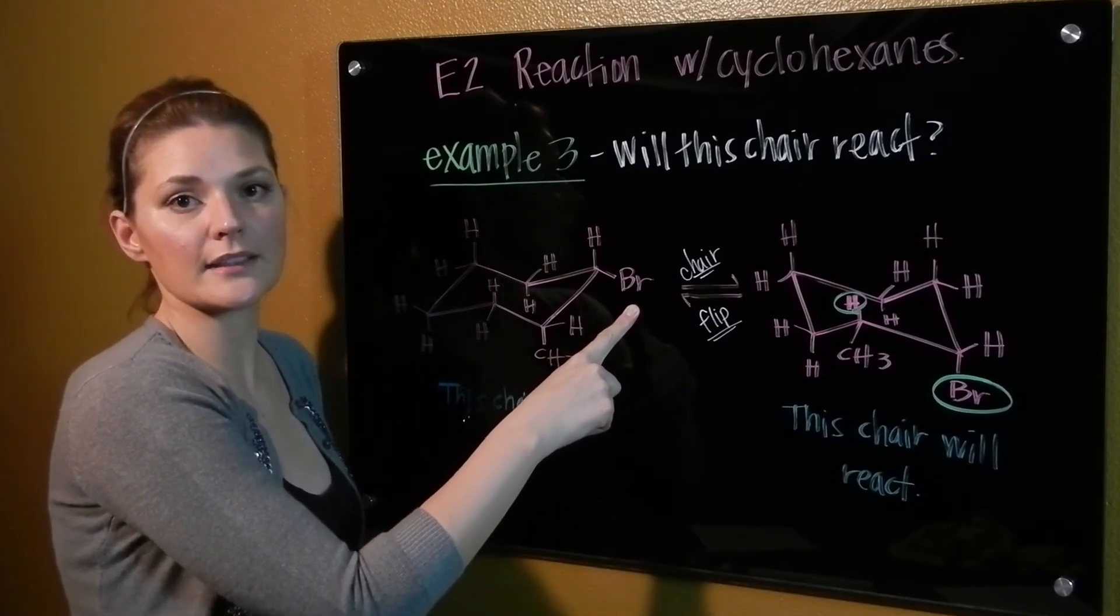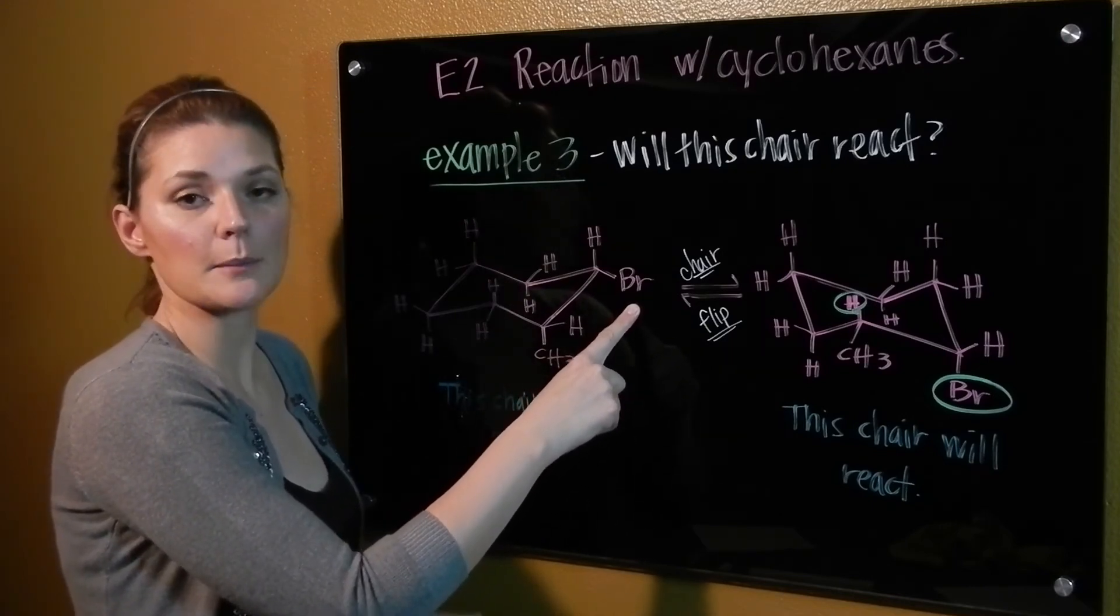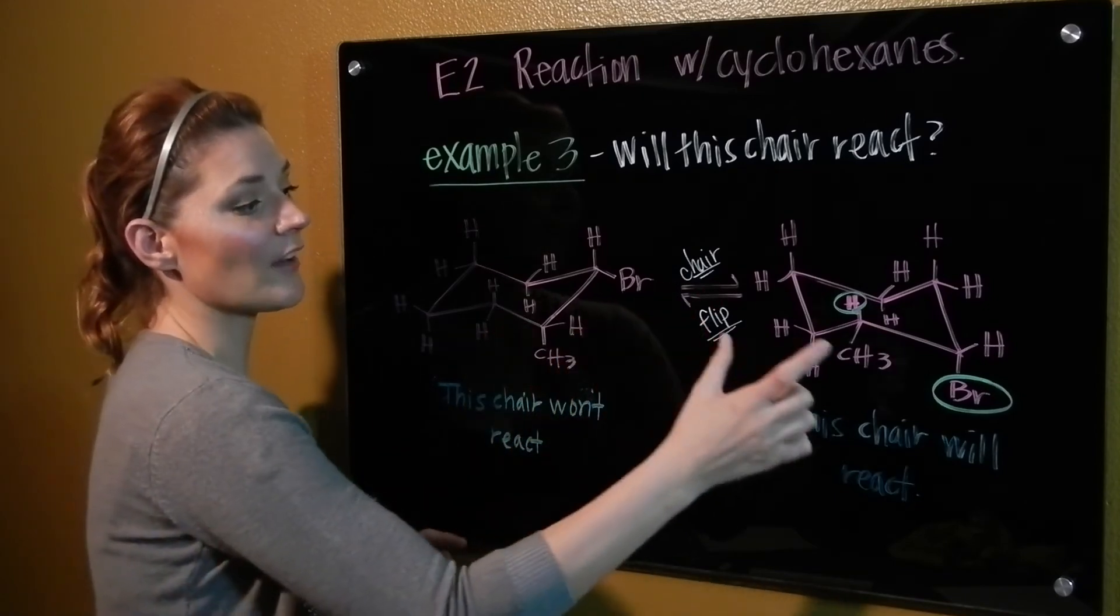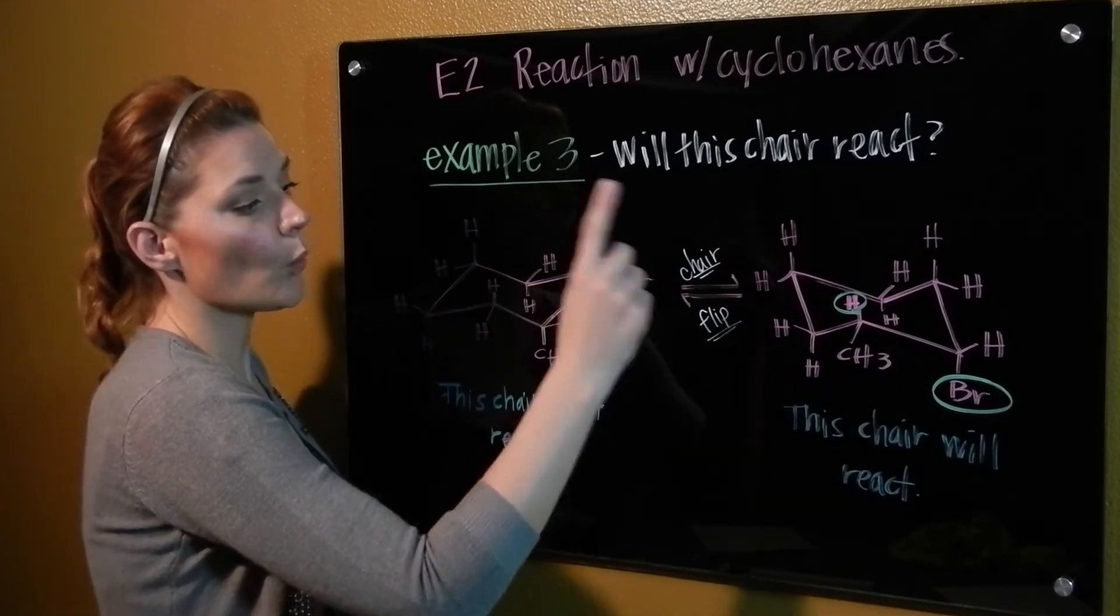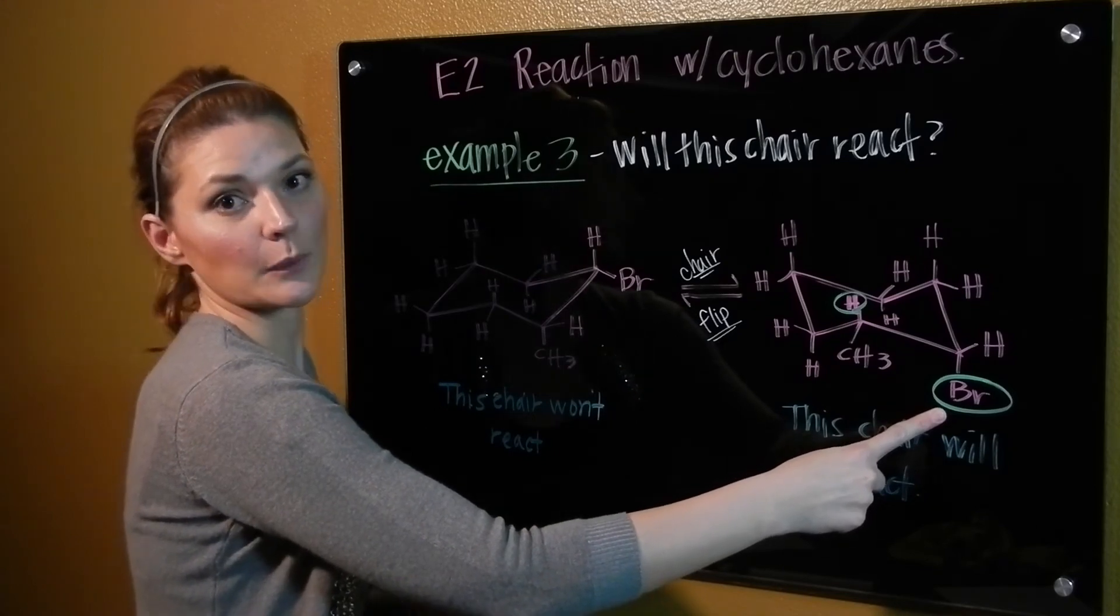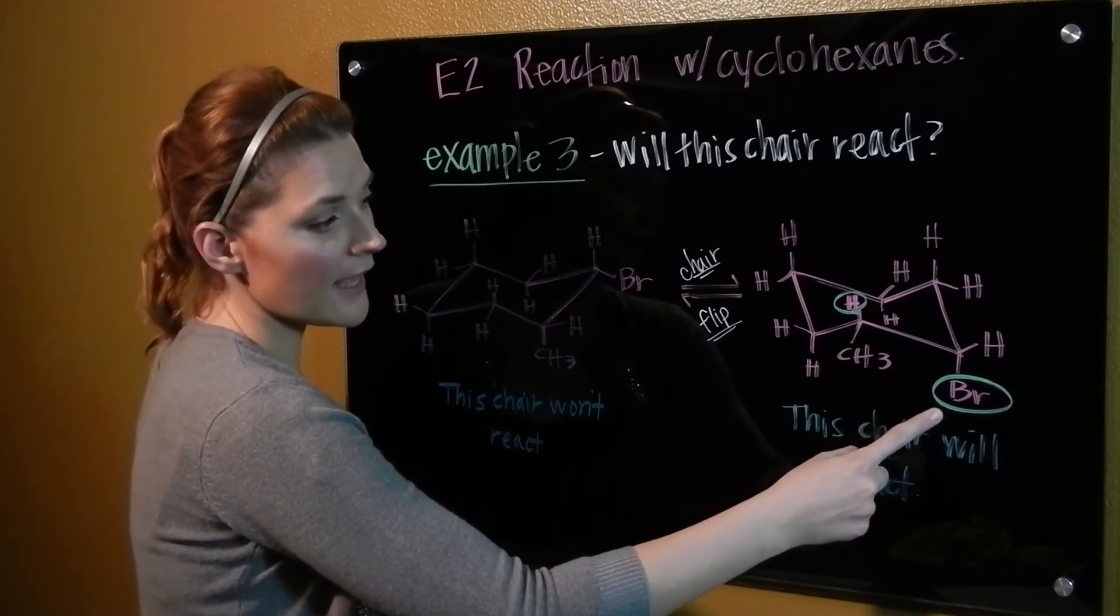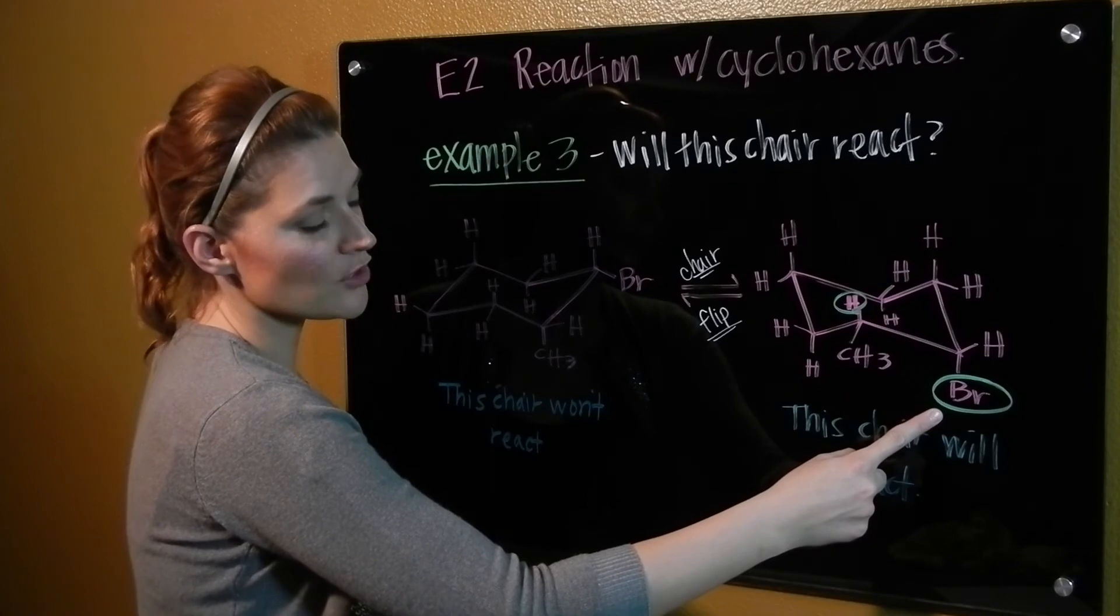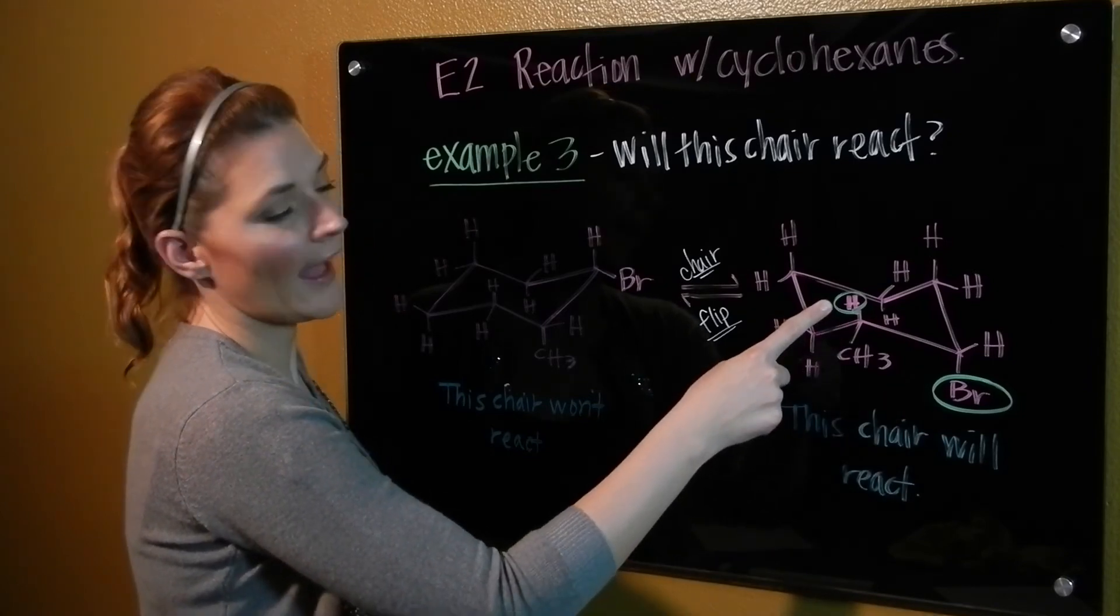That doesn't mean you automatically say that this will not react. Because this chair can have a chair flip occur. And when the chair flip occurs, our bromine is now located in an axial position. So now because it's axially located, and we do have a beta carbon with an axial hydrogen, we can say that yes,